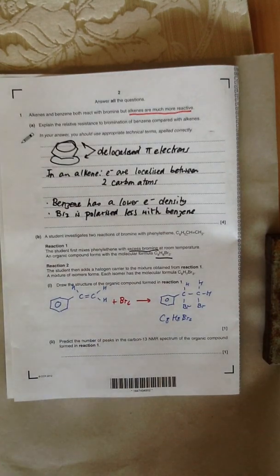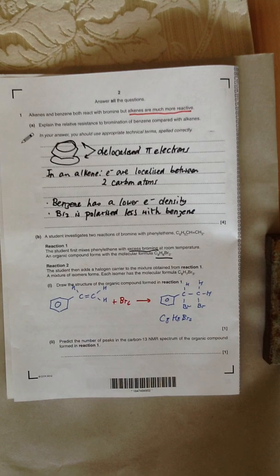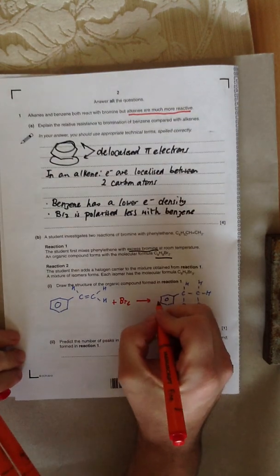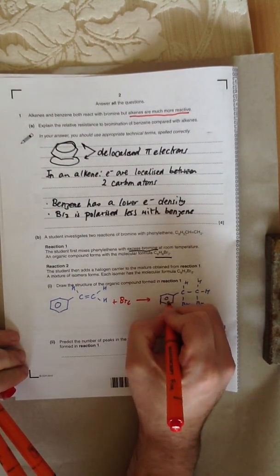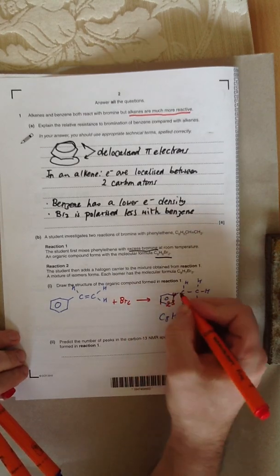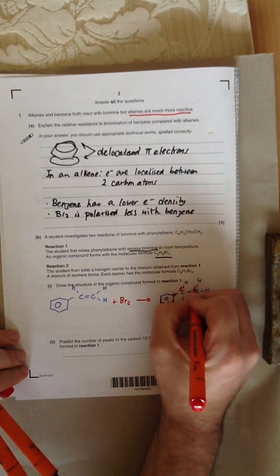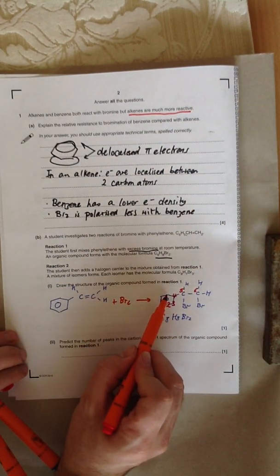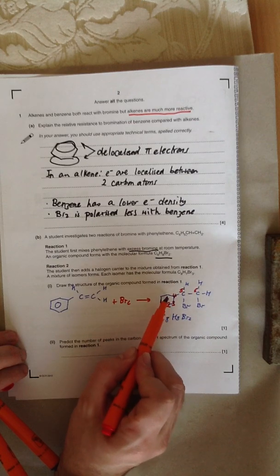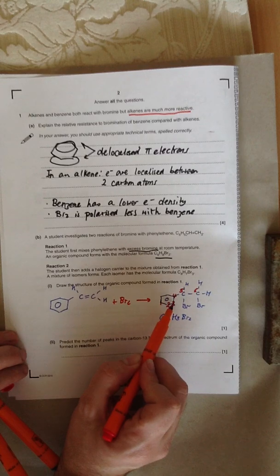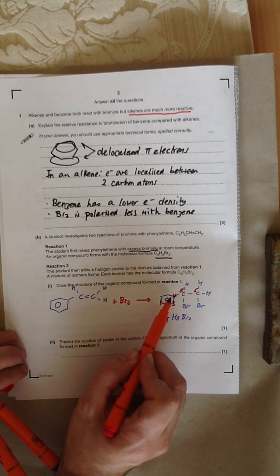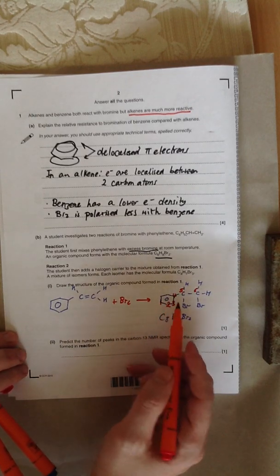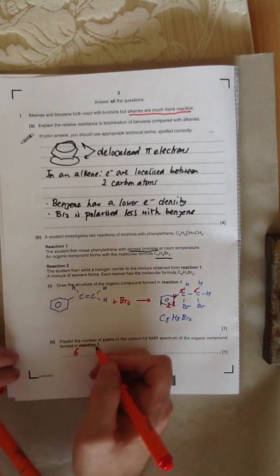The question then goes on to say, predict the number of peaks in the carbon-13 NMR of the organic compound formed in reaction 1. Let's number these. That's going to be 1 carbon, 2, 3, 4, 5, 6. The question you may ask is, why isn't that carbon seen in the NMR? Well, it is, but that carbon there at the top of the benzene ring is exactly the same by symmetry as that carbon there. It's the same as carbon 3. So you don't get a different peak, so you only get 6 peaks.